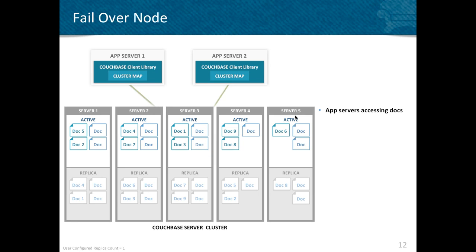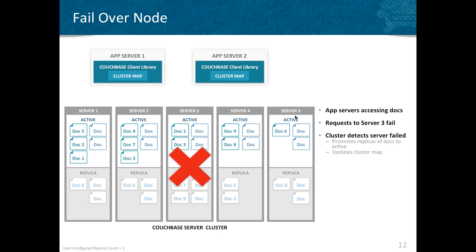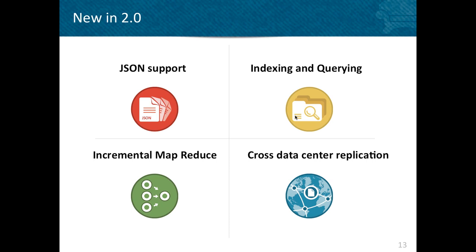In a failover scenario, you can use the automated failover mechanism that's part of the cluster manager. The cluster manager will detect that a node is down and promote the replicas to active. We also have manual failover techniques for administrators who prefer that approach. Your replica data will get promoted to active, and all the data that was down for maybe a couple of seconds is now available again. The cluster map has access to where the replica shards live, so it now has access to all the data in the cluster.